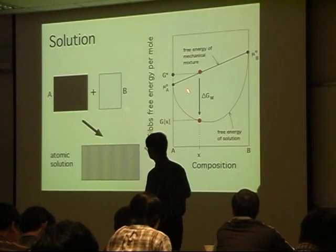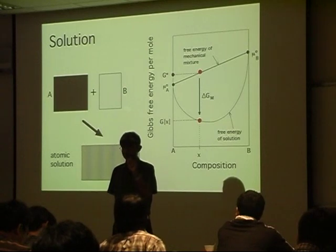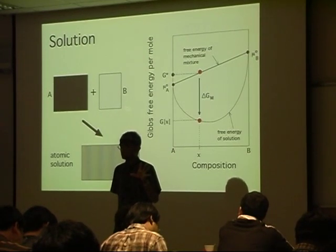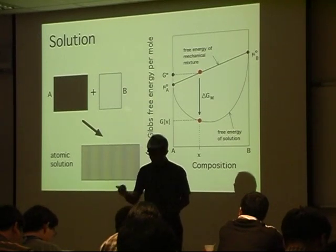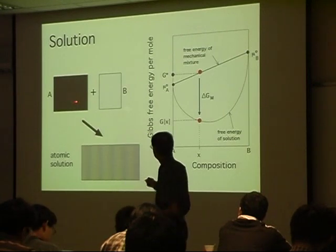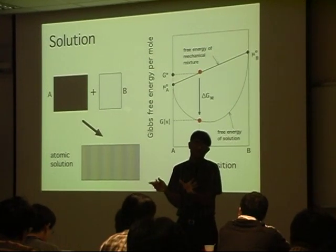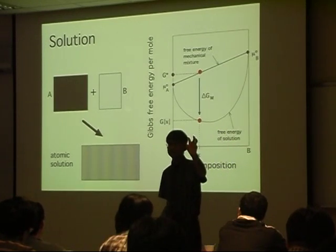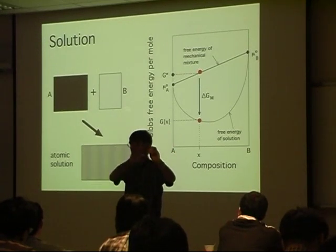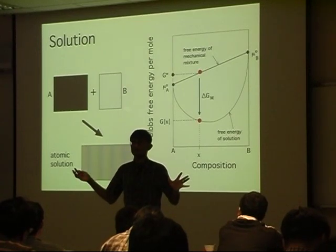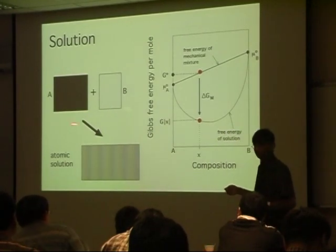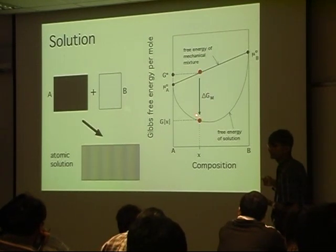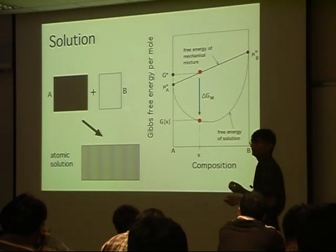The reason is the entropy. When you have two large lumps, there is only one way of arranging them — A and B. If you mix the atoms up on a very fine scale, you get a huge number of possible arrangements: the first A atom can be placed on any one of the sites, the second on N-1 sites, and so on. This is a very favored way of arranging atoms from the entropy point of view, and that leads to a reduction in free energy. This is the free energy of a solution versus the free energy of a mechanical mixture.